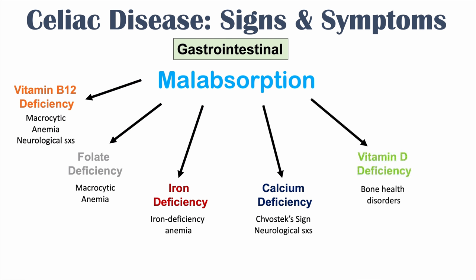In some cases, the terminal ileum may be affected — the last portion of the small intestine before the large intestine, where fat-soluble vitamins are absorbed. Vitamin D deficiency can result, leading to characteristic bone health disorders. Celiac disease patients may also have vitamin K deficiency, another fat-soluble vitamin, which increases the risk of bleeding, bruising, and petechiae/purpura.